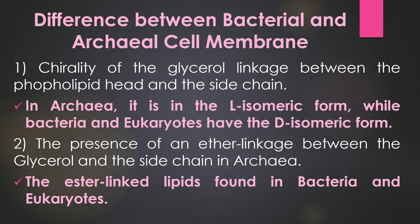There are several characteristics of the plasma membrane that are unique to Archaea, setting them apart from the other domains of living organisms. One such characteristic is chirality — the chirality of the glycerol linkage between the phospholipid head and the side chains. In Archaea, it is in the L-isomeric form, while in bacteria and eukaryotes, they have the D-isomeric form.